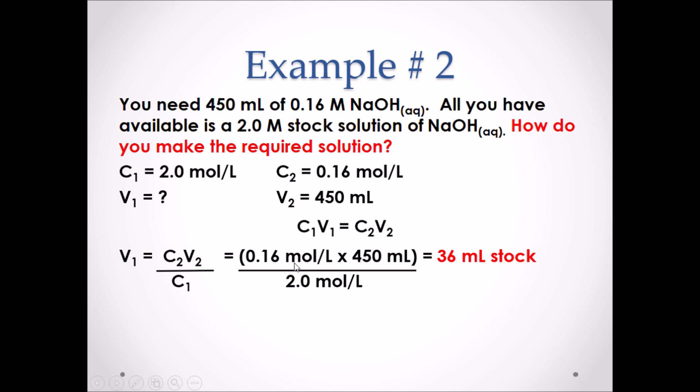If we input our values, we are left with 36 milliliters of the stock is required to make the new solution. In order to actually make that solution, we need to take 36 milliliters of the 2.0 moles per liter stock solution. Then we need to add 414 milliliters of water to then equal our total of 450 milliliters of the new solution that has a concentration of 0.16 moles per liter.